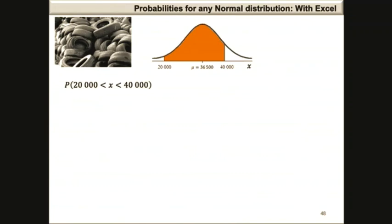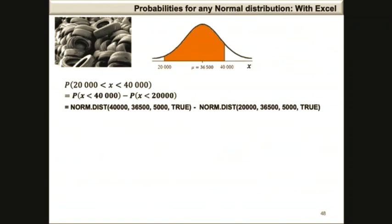Using our Excel functions, the probability that x is between 20,000 and 40,000 equals the probability of x less than 40,000 minus the probability of x less than 20,000. This is equal to NORM.DIST(40000, 36500, 5000, TRUE) minus NORM.DIST(20000, 36500, 5000, TRUE), and the answer is 0.7576.